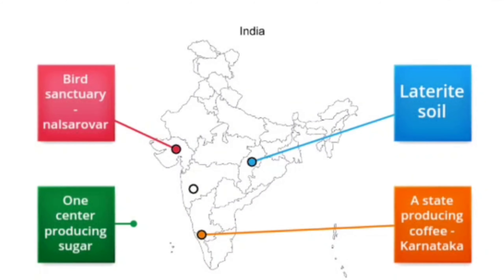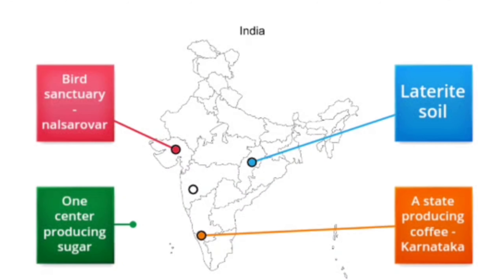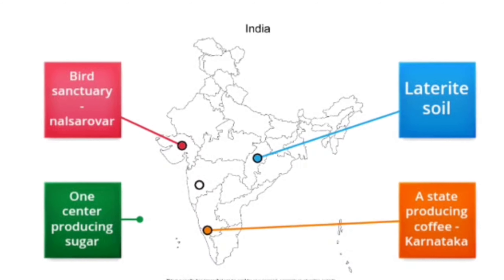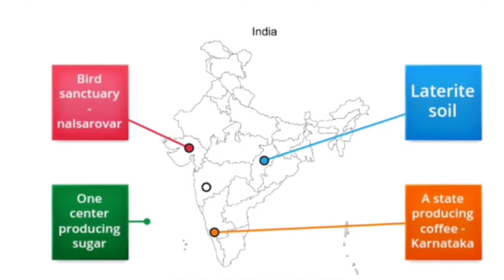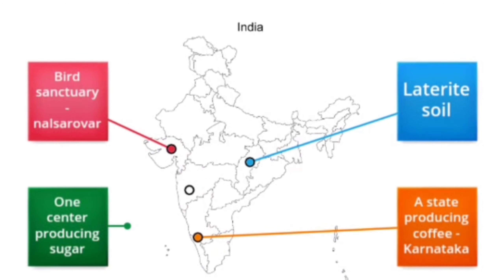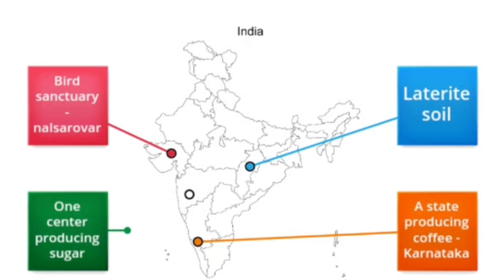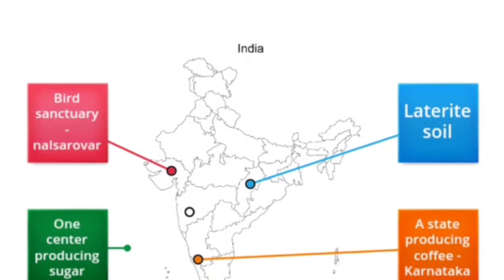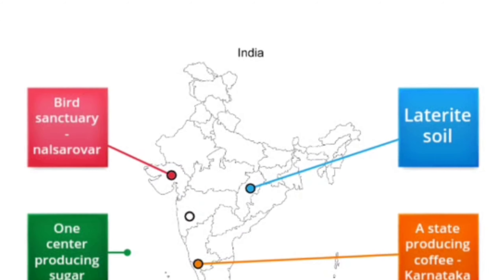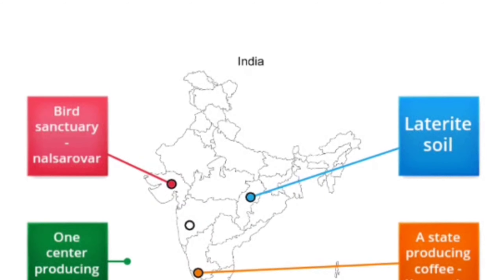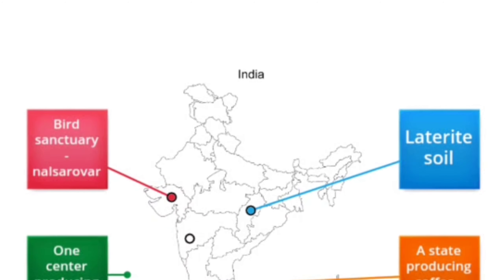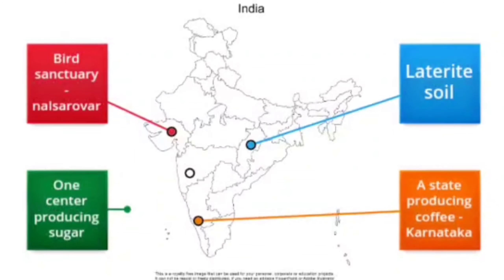Number four is a center producing sugar. Do you know where it is located in India? There are sugar producing industries in Maharashtra. You can show an industry producing sugar in Maharashtra — drag the line and deliver it to this point.